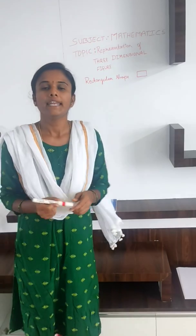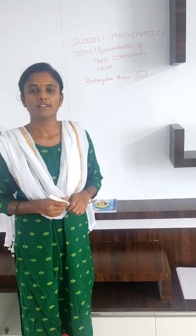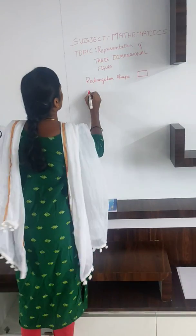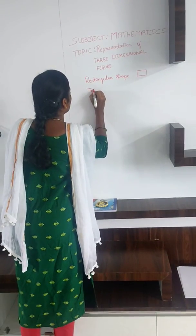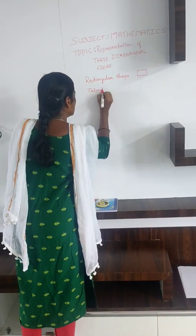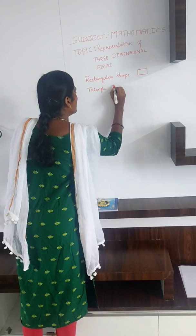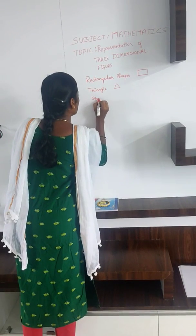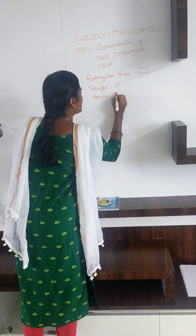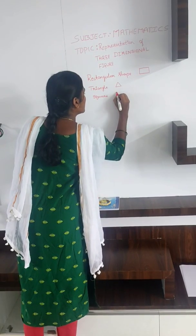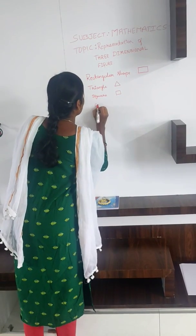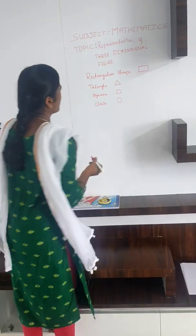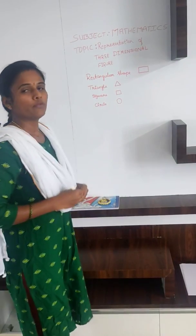Tell me the name of three more shapes. Triangle, square, circle. Very good.